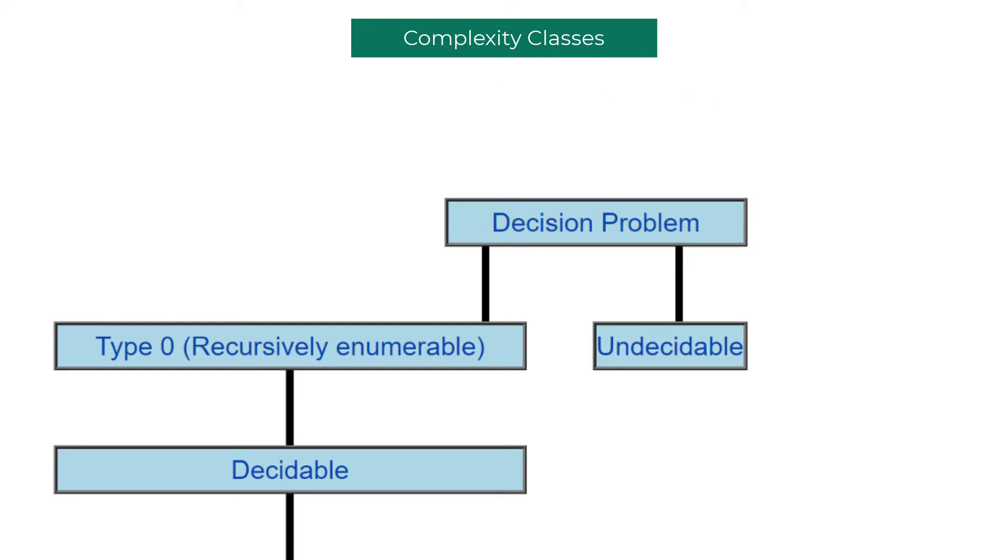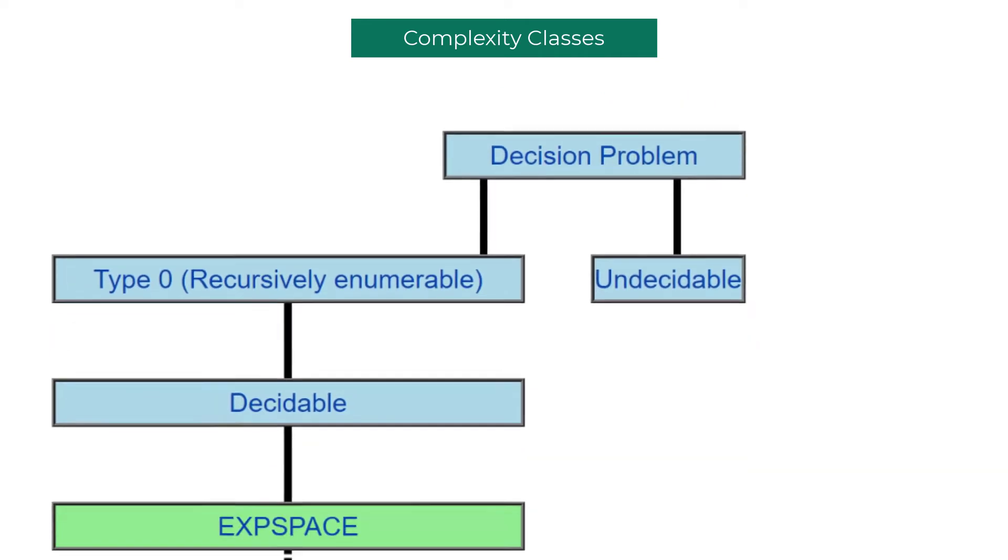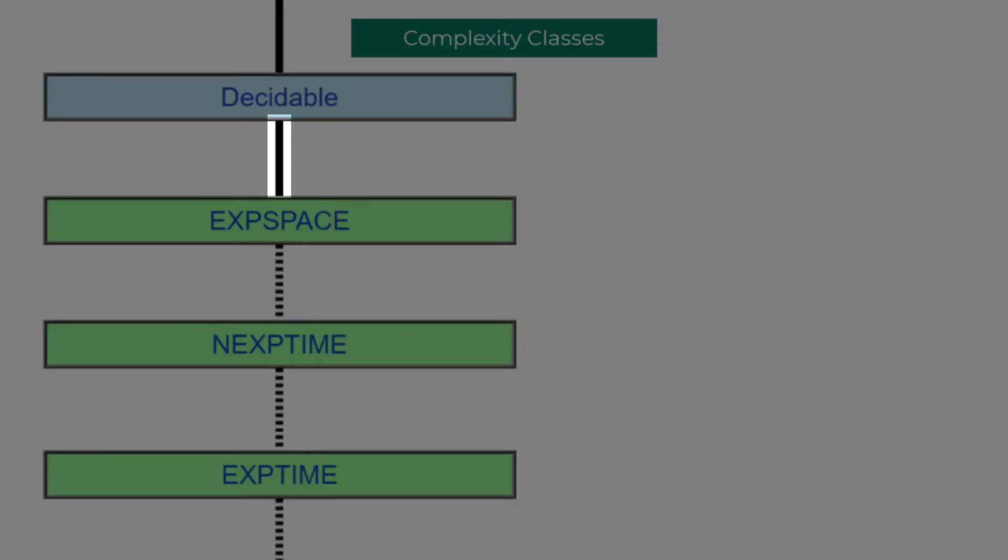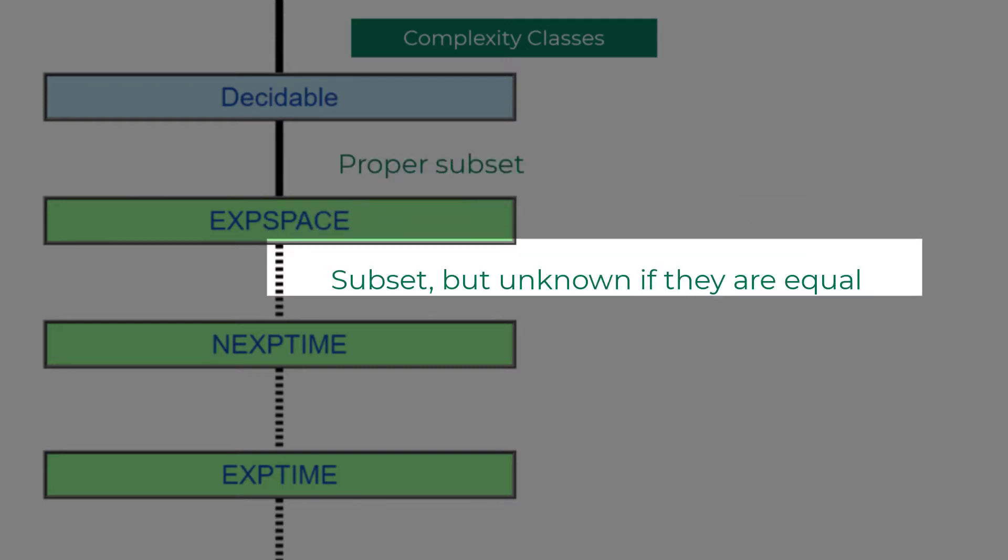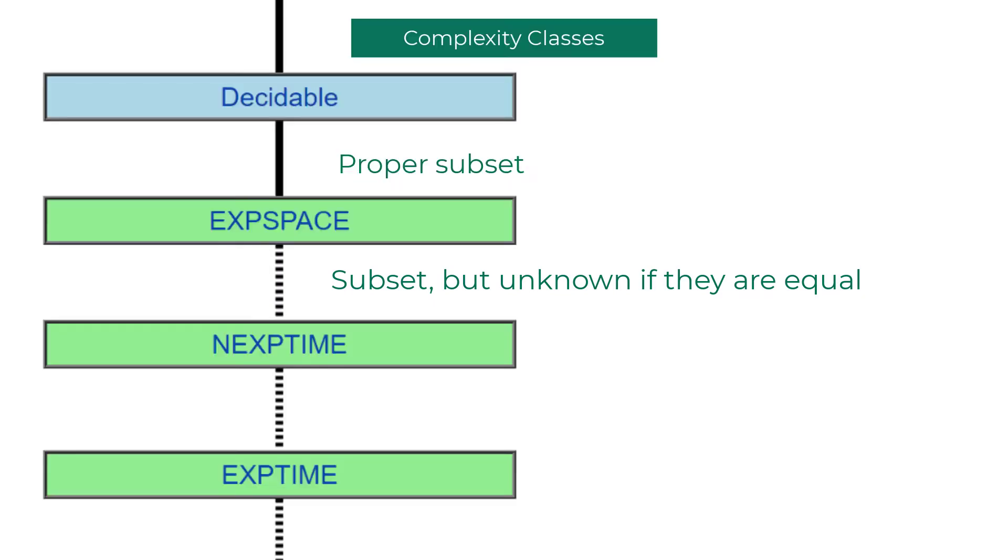All right, so let's switch our focus to problems that can be solved using computers. In this figure, if you see a hard line, it means it's a proper subset. If it is a dotted line, the one that is below, it means it's a subset but unknown if they are equal. So these are like open problems in computer science for which there is ongoing research.